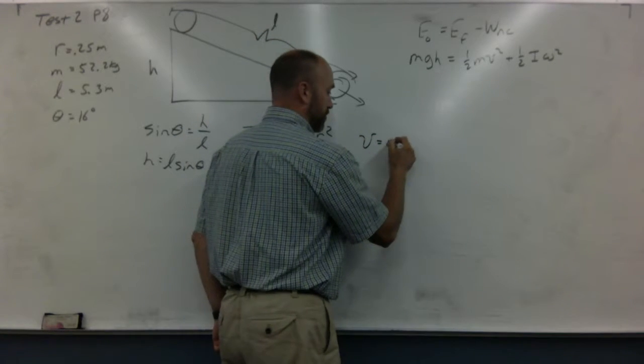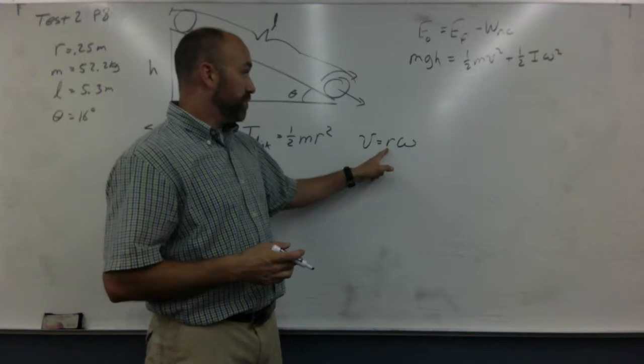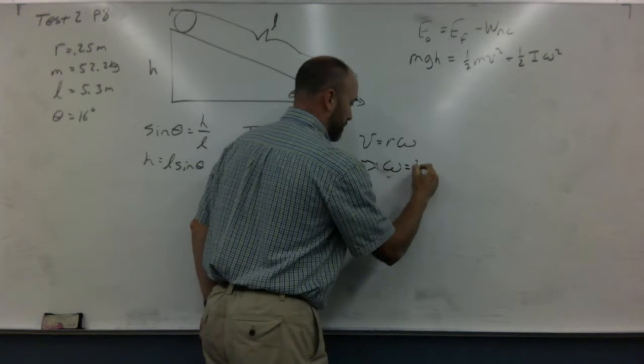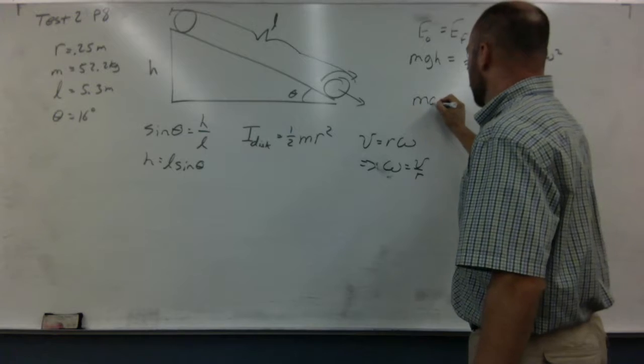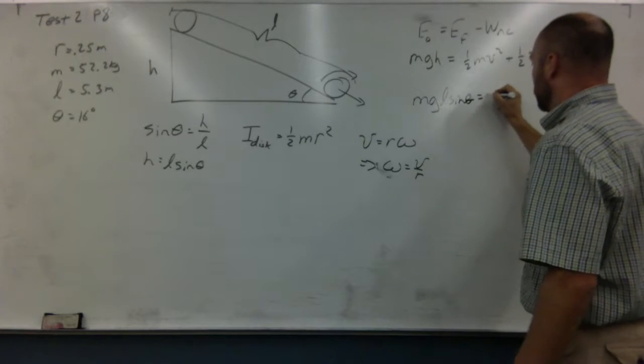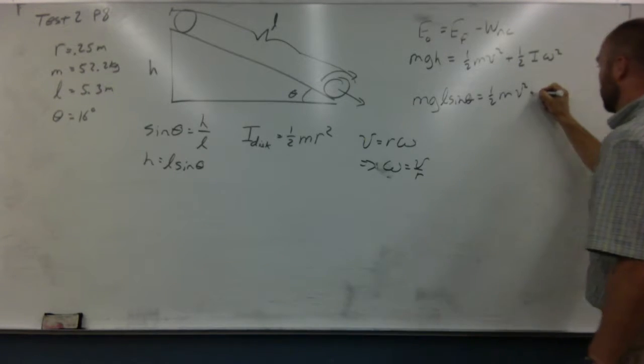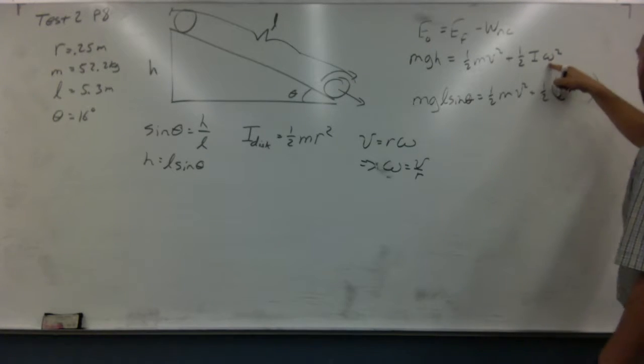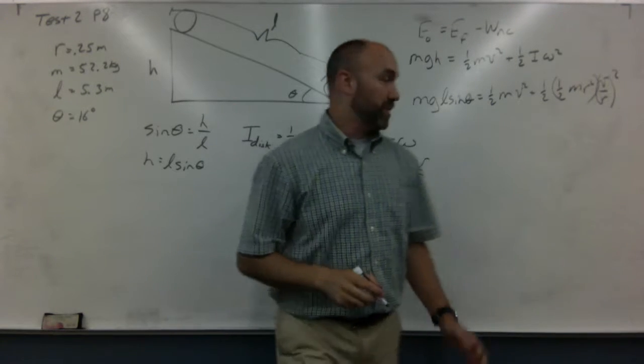So we're going to need another equation here. We're going to use v equals r omega. This is how you go from the linear world to the angular world and go back and forth. We're going to solve this for omega. So omega is v over r. We're going to plug that in here. So now we can rewrite this equation. So we have mg. Instead of h I'm going to write l sine theta. And then we're going to have equals one half mv squared. Plus one half i, which is one half m r squared, times omega, which is v over r. And don't forget that's squared also.